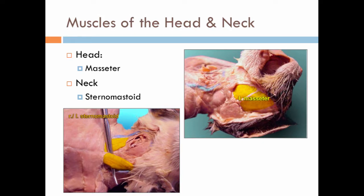Here we have a picture of muscles of the head and neck. On the right-hand side, we have a picture of the masseter, which is a muscle of the head. This is the left masseter, the muscle of chewing. Down below, you have a muscle of the neck, which is the sternomastoid.